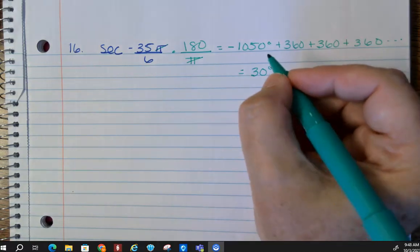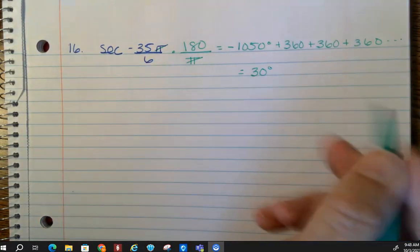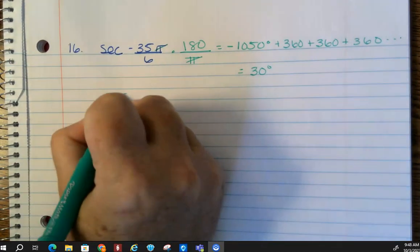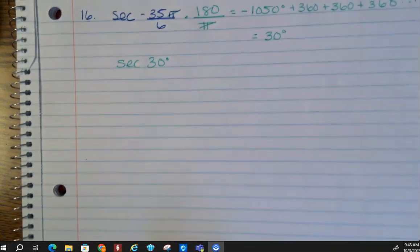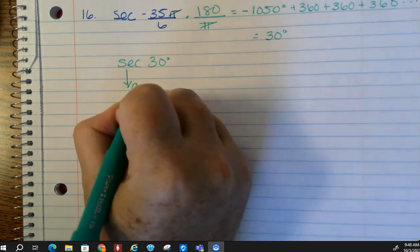Did you get that, Jacory? The 30? Okay. So, here we go. We want the secant of 30 degrees.